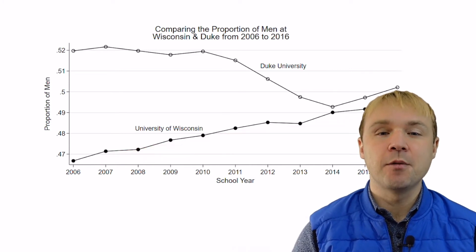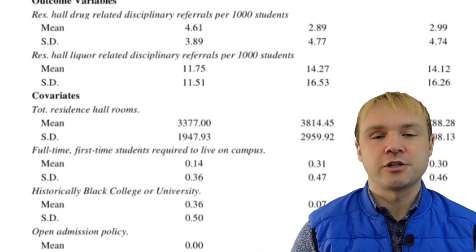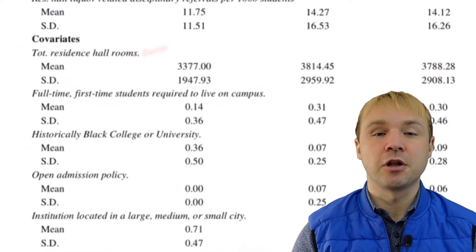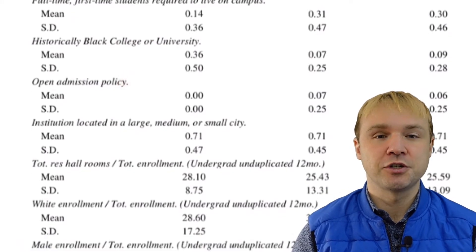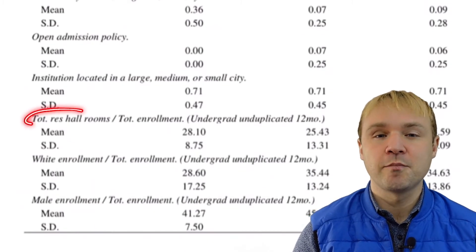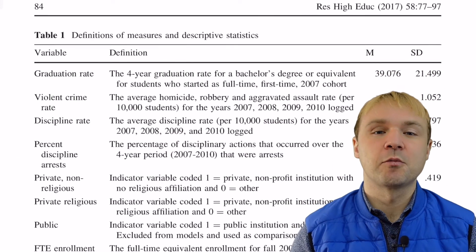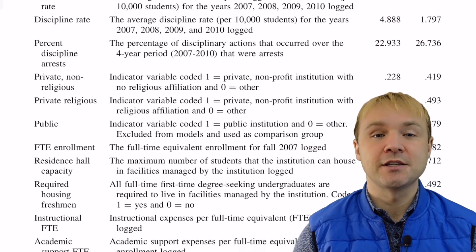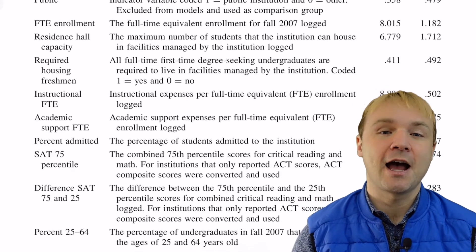Most recently we see that both institutions are right at or just under 50% male enrollment. In this additional demonstration of IPEDS data, this is a table from a paper I've published in the Journal of Law and Education — it provides summary statistics about higher education institutions involved in the study. Here is another example, also in table form, from Amy Shuck at the University of Chicago, where she summarizes institutions she was studying using a variety of variables available in IPEDS data.